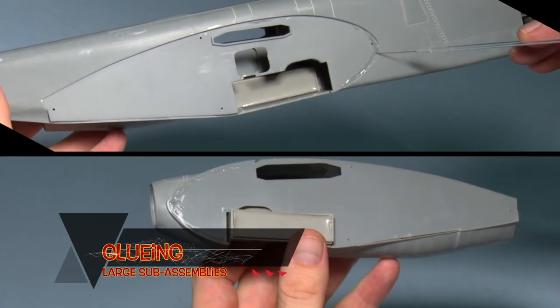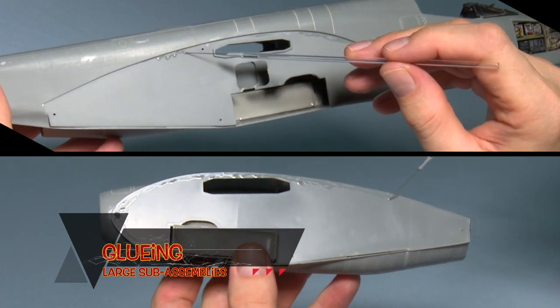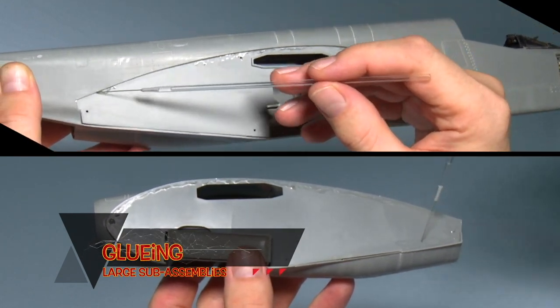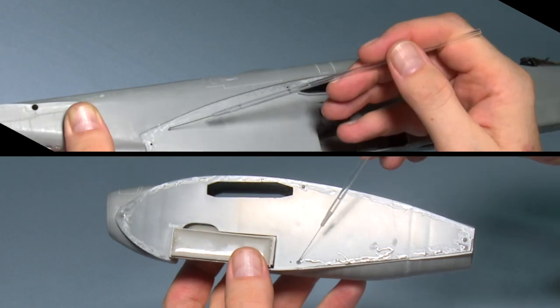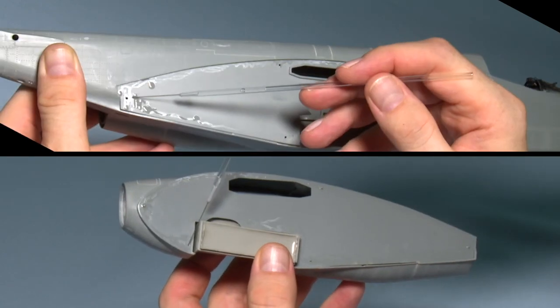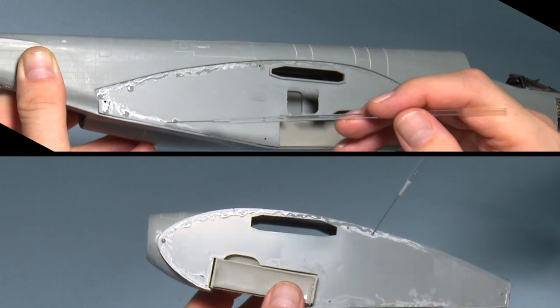As with the structural joins, when you're gluing large sub-assemblies together, you really need to make sure that there's adequate amount of glue coverage in between the two surfaces that are to be mated.